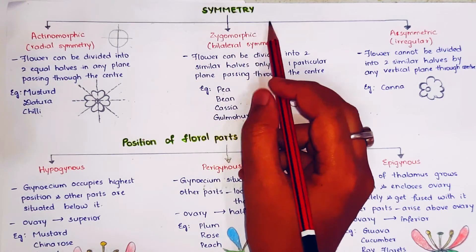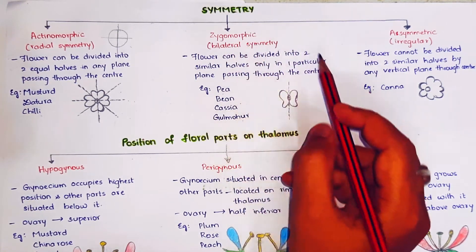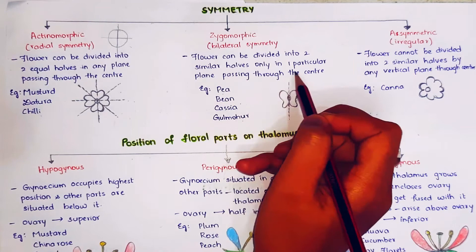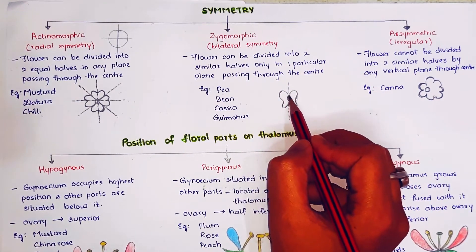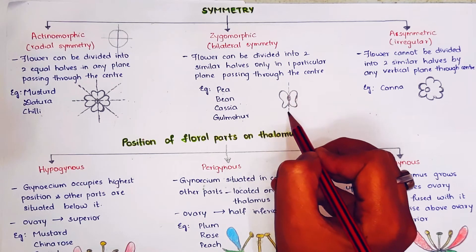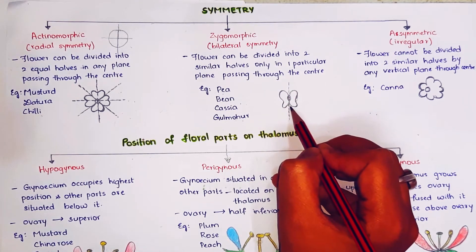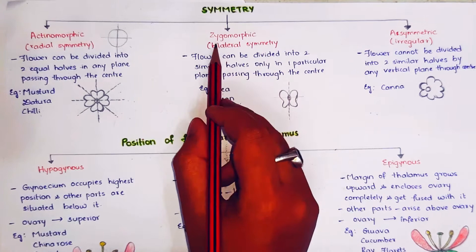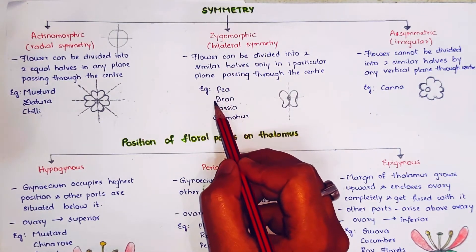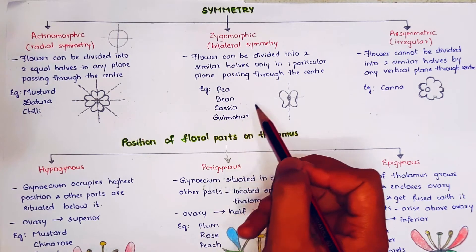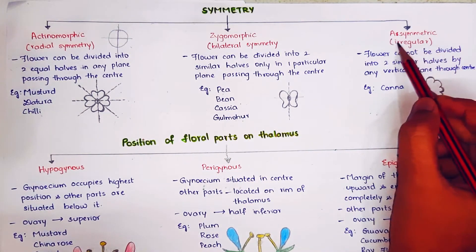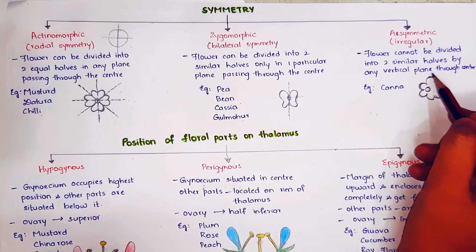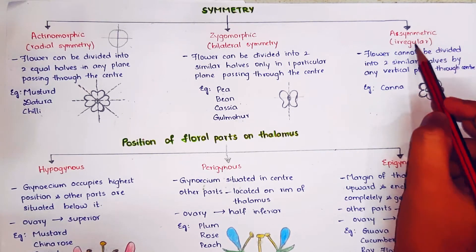Coming to zygomorphic symmetry, also called bilateral symmetry: the flower can be divided into two similar halves only in one particular plane passing through the center. If you divide the flower through any other plane, equal halves are not formed. Examples of zygomorphic symmetry are pea, bean, cassia, and gulmohar. Asymmetric or irregular: the flower cannot be divided into two similar halves by any vertical plane through the center. Example of asymmetric is Canna.